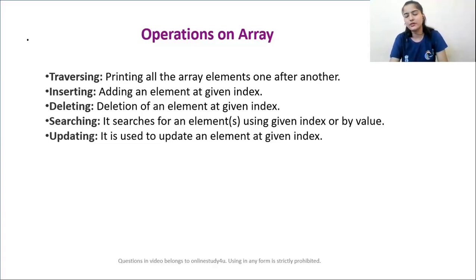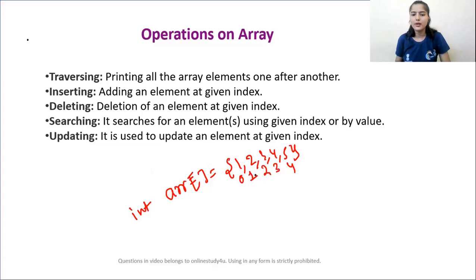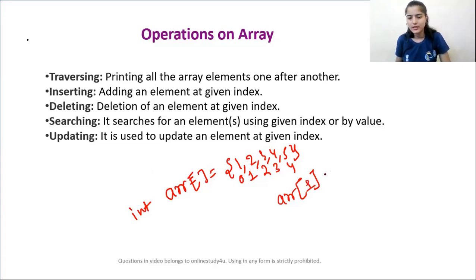Let me take an example for updation. You have an array of integer type with values 1, 2, 3, 4, 5. The indices are: zero index, first, second, third, fourth. If you want that at the first index, instead of 2, you want 22, you simply write the array name followed by the index — ARR[1] = 22. That is how you update a value in your array.